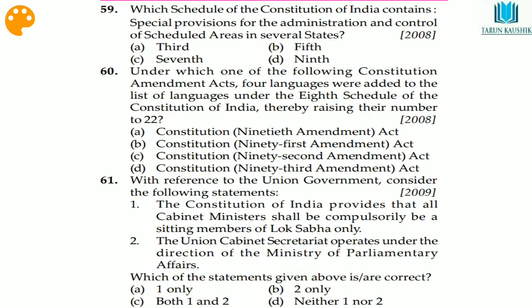Question 59: which Schedule of the Indian Constitution contains special provisions for the administration and control of scheduled areas in several states? The answer is the Fifth Schedule — option B.